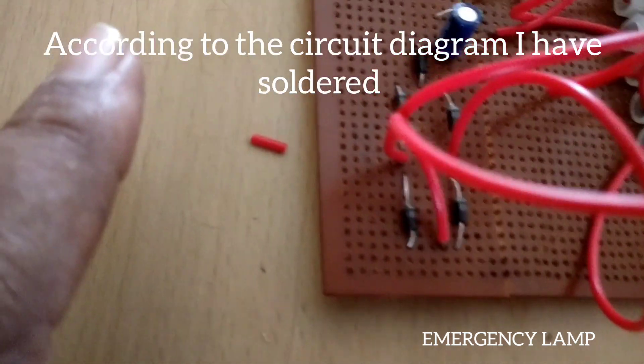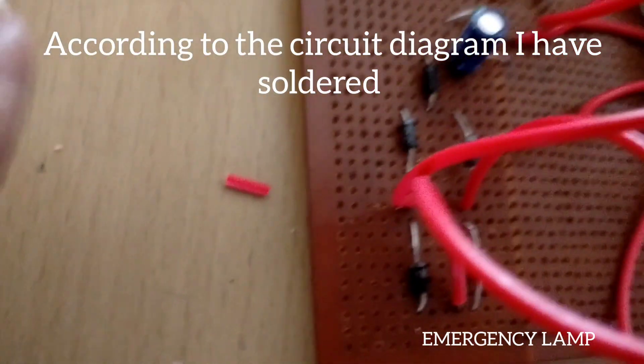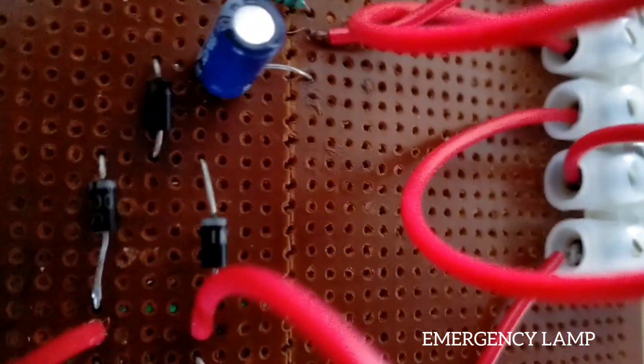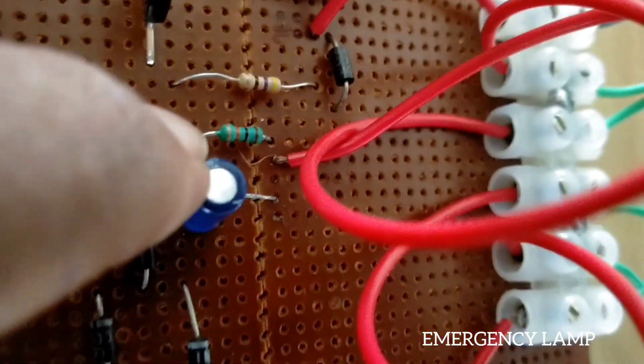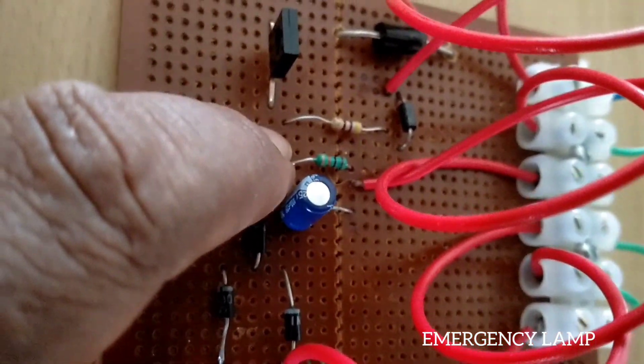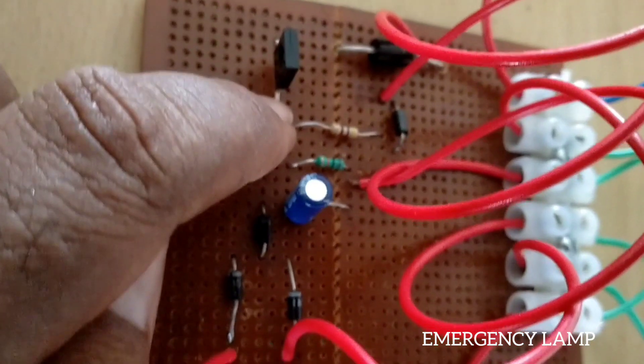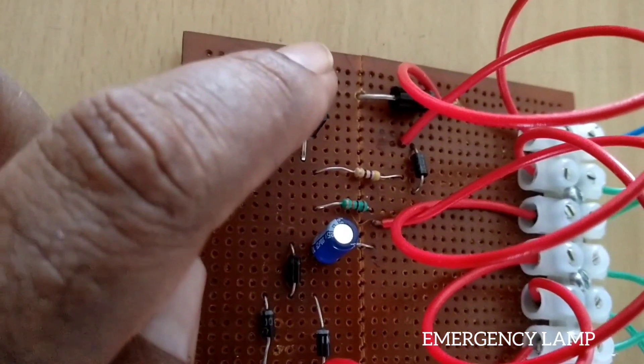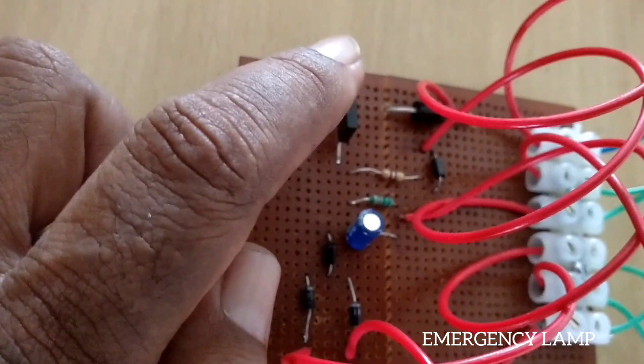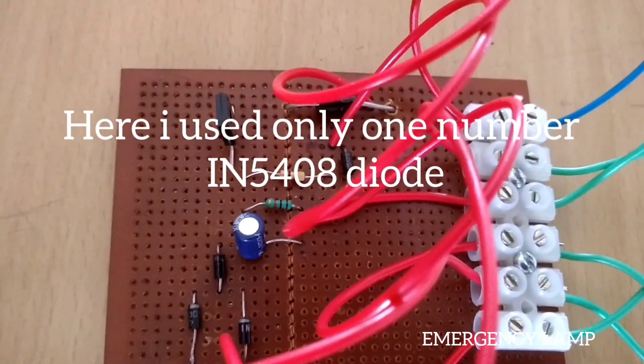See I have soldered all the components - that is IN4007 diode and 100 microfarad of 25 volt capacitor, 10k resistor, and 470 ohms resistor, and T1 transistor BD140, and the diode IN5408.